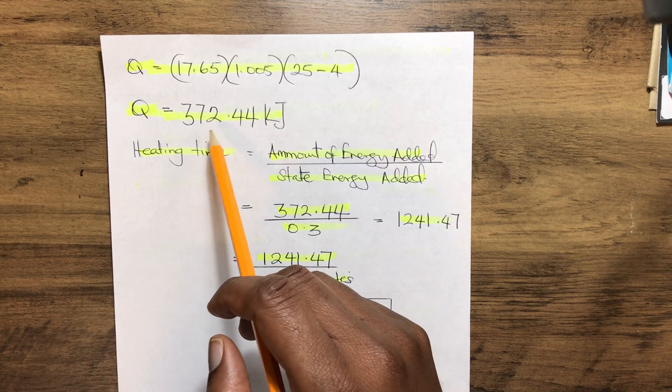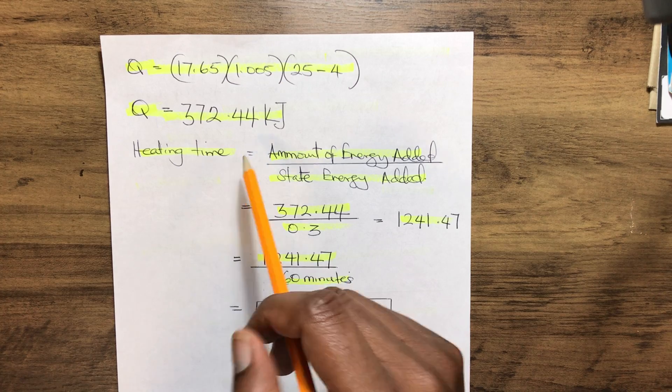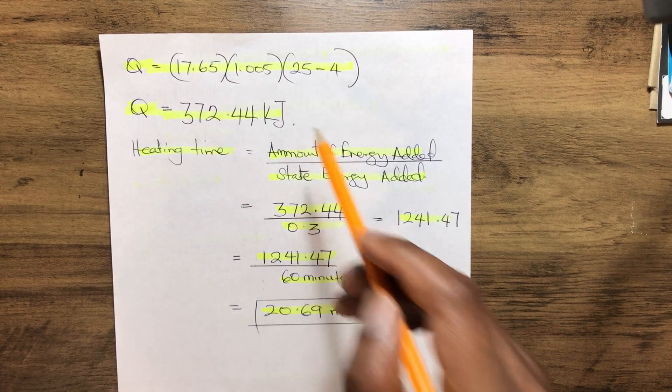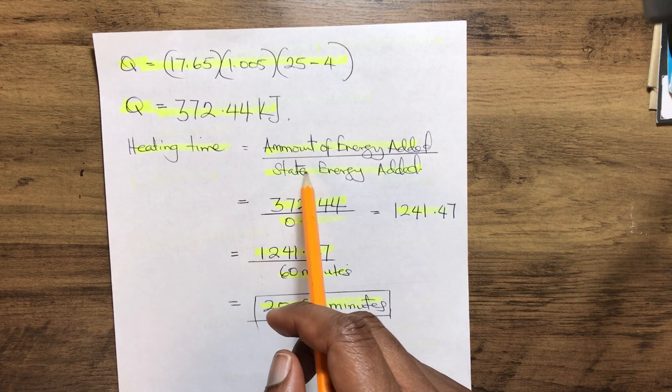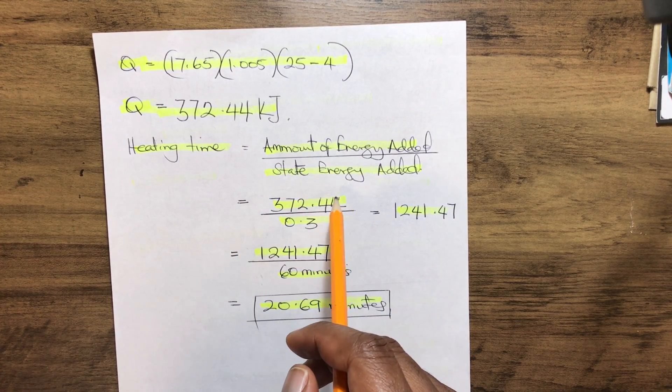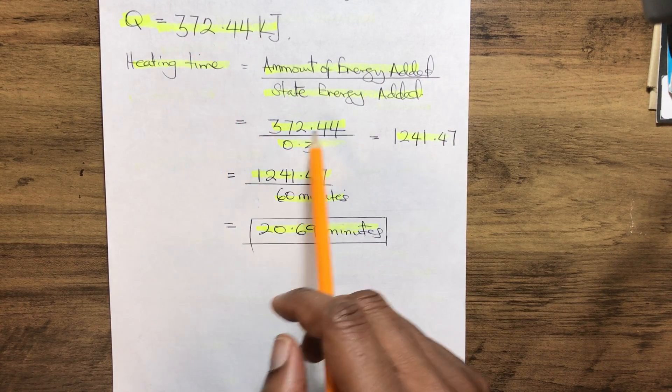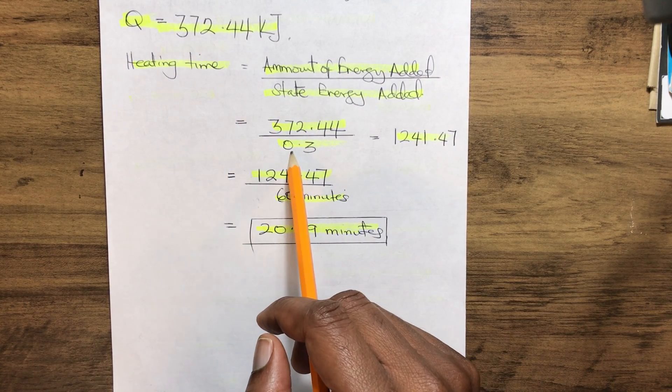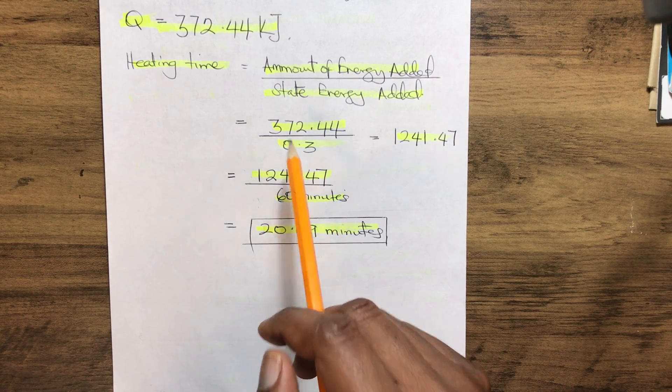Now the heating time mathematically will be amount of thermal energy over rate of energy added. That gives us 372.44 over 0.3 kilowatts of heat released to the room, which gives us 1241.47 seconds.